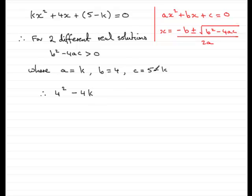times the c value. Don't forget to put that in brackets, 5 minus k, because there's two terms there. It's got to be greater than 0.